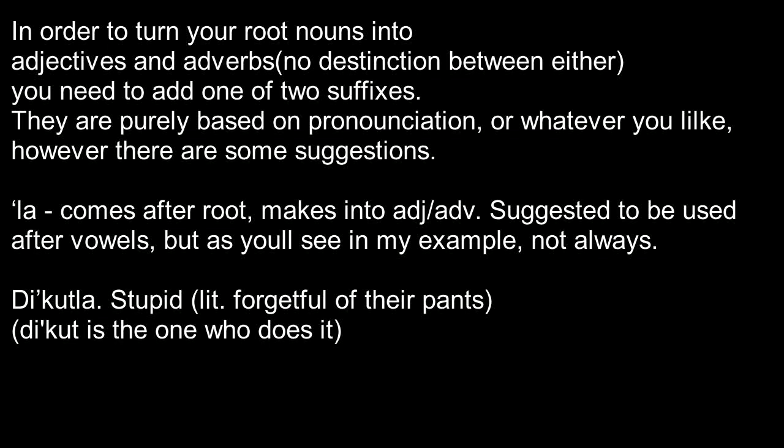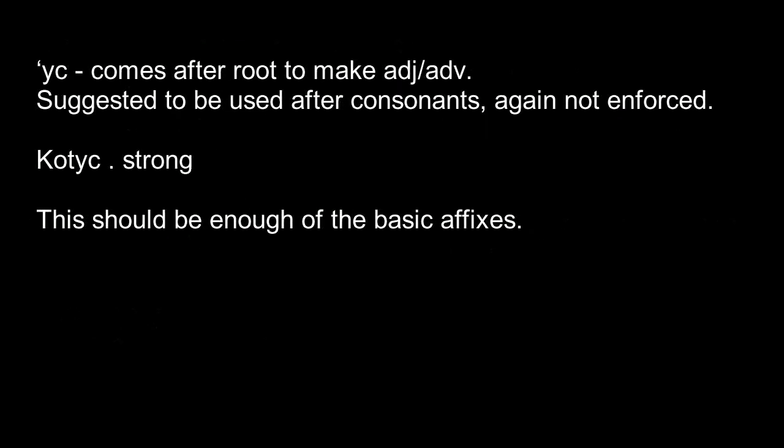'Dekutla' means stupid — or literally, someone who forgets their pants. 'Dekut' is an idiot, someone who forgets their pants. You add the LA to the end — even though it ends in T, not a vowel, I still added LA because that's what most people do and it's generally accepted. My other ending is apostrophe 'yc,' or -ish. This comes after a root that's usually ending in a consonant, but it doesn't have to — it's not enforced. For example, 'kot'ish' — this is the adjective form of 'kot,' which means strength. 'Kot'ish' is strong. That should be enough of the affixes.